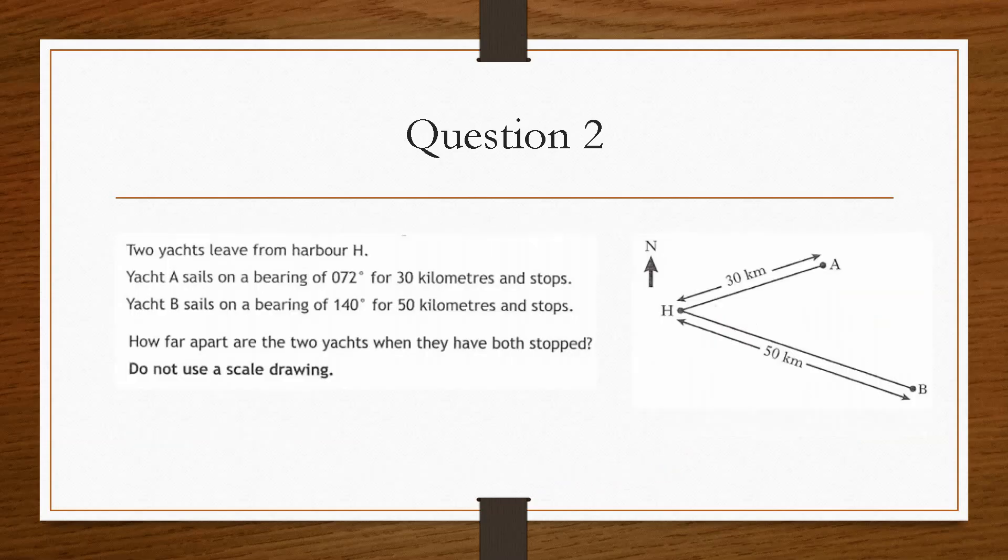Now question 2 is, again it's a yacht, and two yachts leave the harbour, H, so that is here. Yacht A sails on a bearing of 72 degrees for 30 kilometres, and B sails on a bearing of 140 degrees for 50 kilometres. And we need to determine how far apart the two yachts are after they have both stopped. So we need to find the distance between A and B here. So that's the line that we're trying to find.